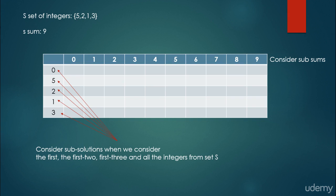The row headers represent the set of integers. We consider sub-solutions when we consider the first item, the first 2, the first 3, and all of the integers from set S. So: what would be the solution if we include no integers (the 0 case), what if we include just the 5, what if we include 5 and 2, then 5, 2, and 1, and so on. These are the sub-problems.